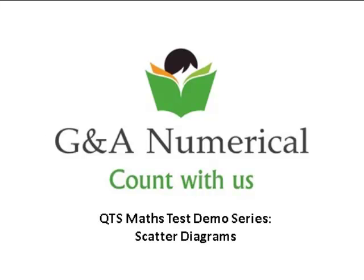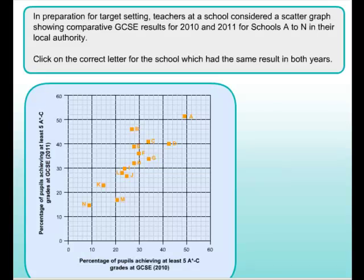QTS Maths Demo Series: Scatter Diagrams. In preparation for target setting, teachers at a school considered a scatter graph showing comparative GCSE results for 2010 and 2011 for schools A to N in their local authority. Click on the correct letter for the school which had the same result in both years.